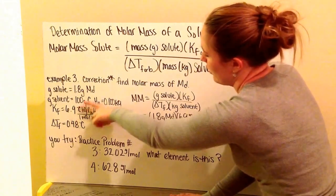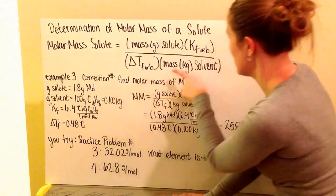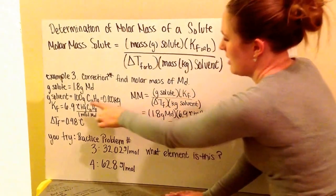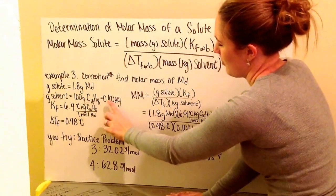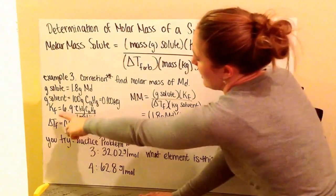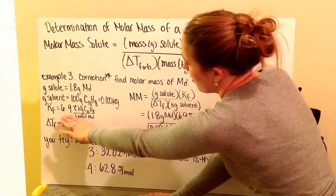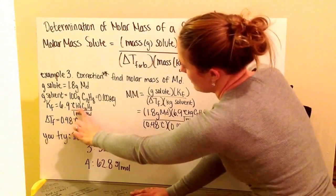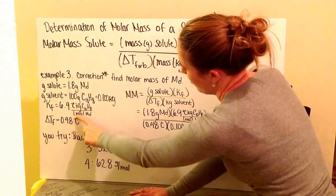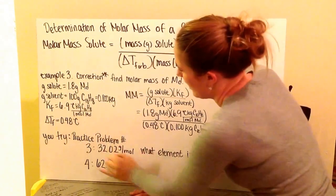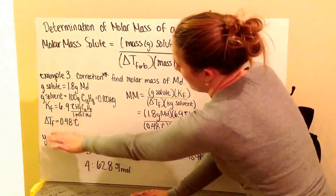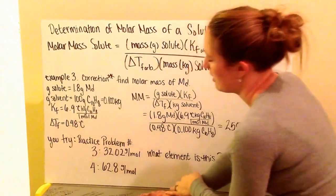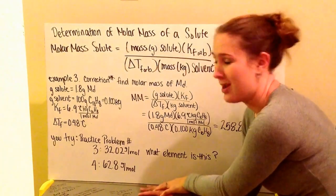100 grams we need to convert to kilograms because that is our mass of solvent, so 100 divided by 1000 is 0.1. Our Kf for naphthalene is 6.9 degrees Celsius kilograms of naphthalene per one mole of solute. My change in F is 0.48 degrees Celsius.